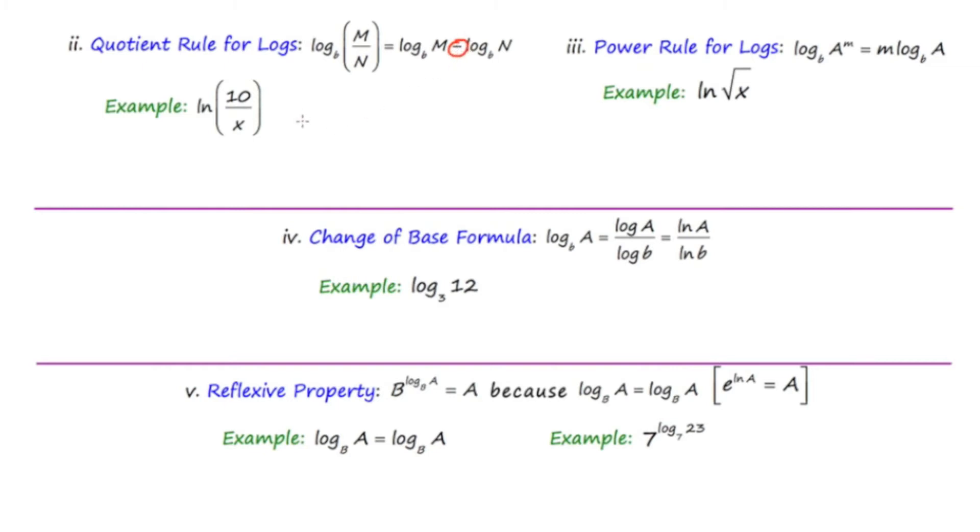And I do have an example for you. So in this example, we have the natural log of the quotient 10 over x. Well, this can be rewritten as the natural log of the numerator or the natural log of 10 minus the natural log of the denominator or minus the natural log of x. So this is just a quick little example just to remind you of the quotient rule for logs.